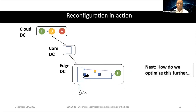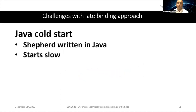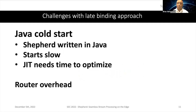How do we optimize this further? There are two challenges with the late-binding approach. First, Java cold start: Shepard is written in Java, which starts off slow because the JIT needs time to optimize the code. In the initial stages the application processes data more slowly, and then eventually it can process tuples much faster. Second, router overhead: multiple operators deployed in the same data center communicate through the router, but the router has to deal with a lot of traffic and can become a bottleneck — the more traffic, the slower it gets.